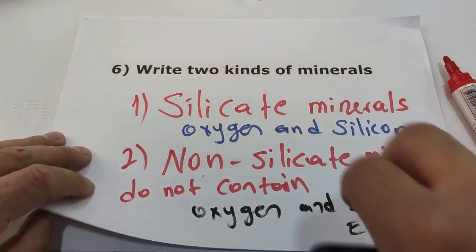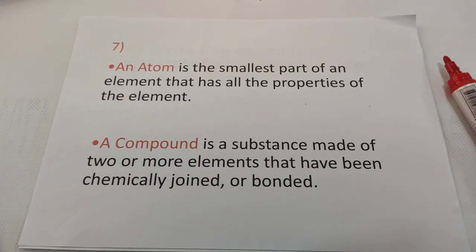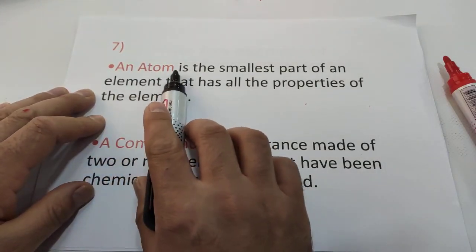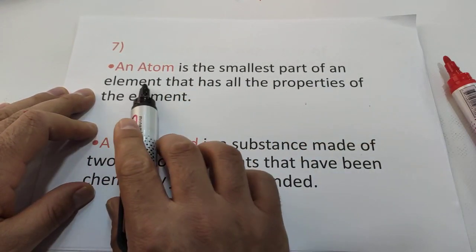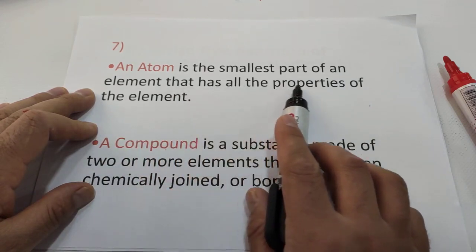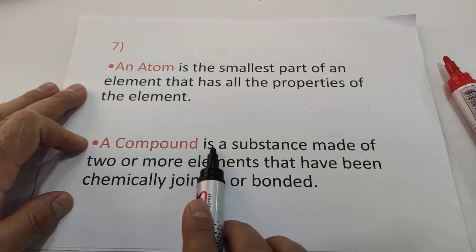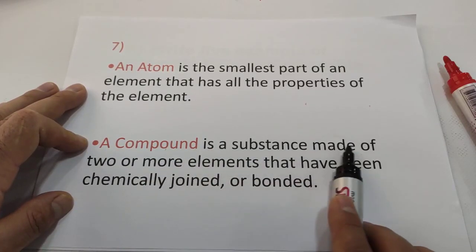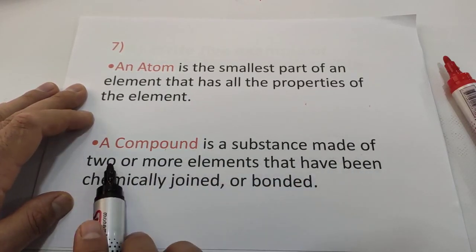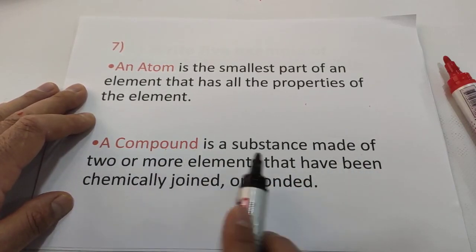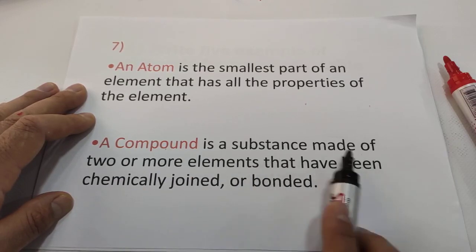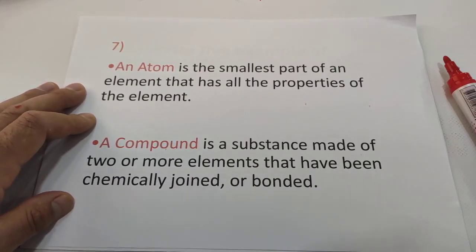Question seven: definitions of an atom and a compound. An atom is the smallest part of an element that has all the properties of that element. A compound is a substance made up of two or more elements that have been chemically joined or bonded together.